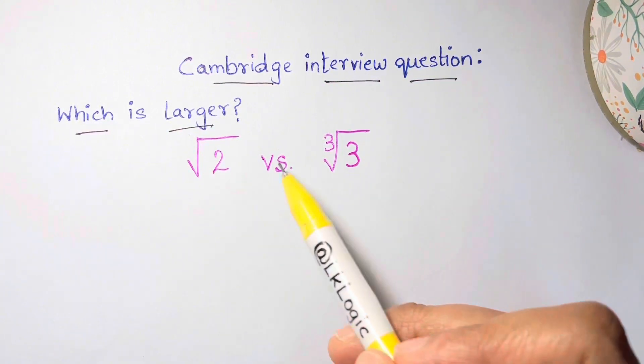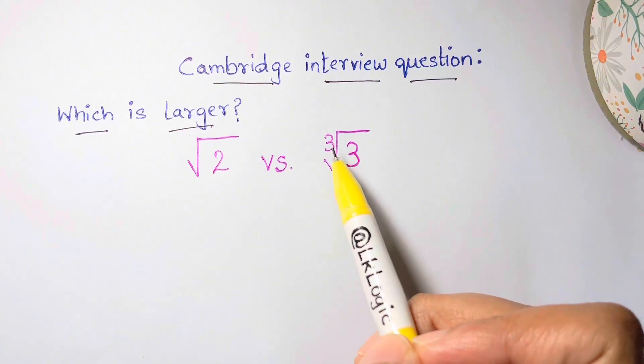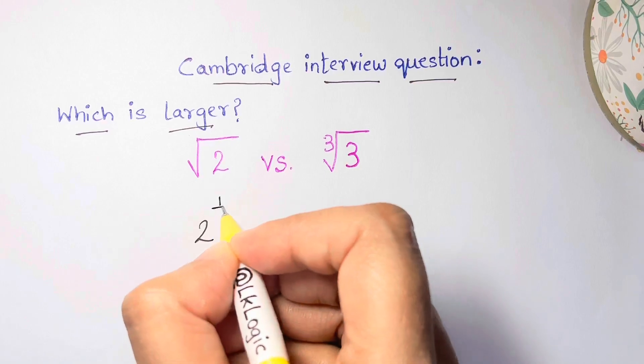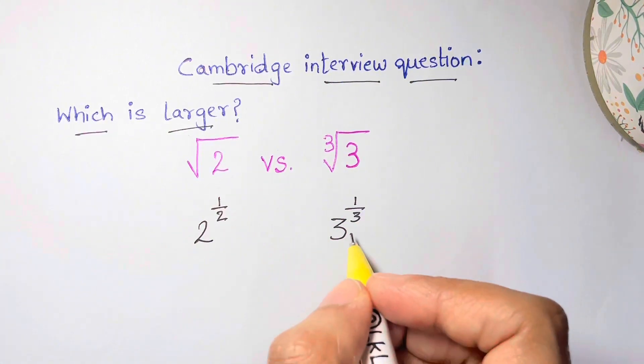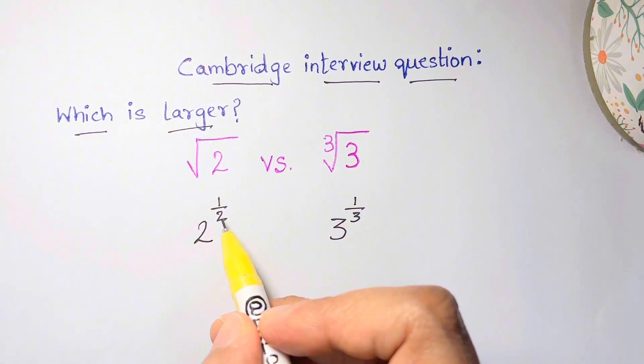Now back to the main problem: square root of 2 versus cube root of 3. We're going to rewrite the indices in this form, so 2 to the power of 1/2 and 3 to the power of 1/3. The two most convenient ways to compare two powers are to either rewrite the index so the indices of the two numbers are equal and then compare the base, or rewrite the numbers so the bases are the same and then compare the indices.